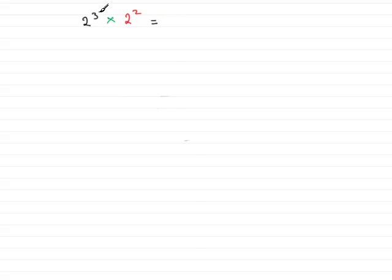Because 2 cubed, or 2 to the power of 3, is short for 2 times 2 times 2. And we're multiplying that by 2 squared, which is 2 times 2. And you can see that I've repeated the 2 a total of 5 times, the result of adding 3 and 2. So the answer is, in short, 2 to the power of 5.